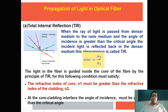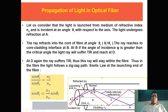In the diagram, this is the denser medium and this is the rarer medium. For the first ray, the angle of incidence is very small, so simple refraction takes place. For the second ray, if the angle equals the critical angle, the angle of refraction is 90 degrees. When the angle is greater than the critical angle, the ray reflects back into the same medium — this is total internal reflection. The required conditions are: N1 must be greater than N2, and at the core-cladding interface, the angle of incidence must be greater than the critical angle.